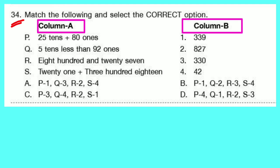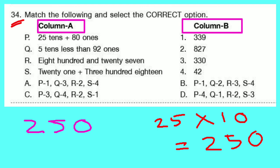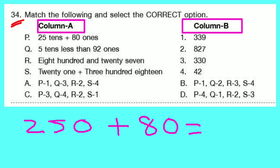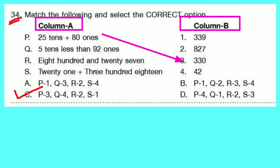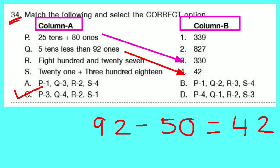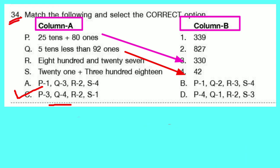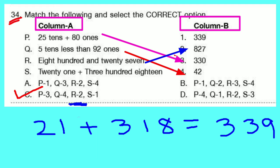Question number 34: Match the following. P — 25 tens plus 80 ones: 250 + 80 = 330, so P matches with 3. Q — 5 tens less than 92 ones: 92 − 50 = 42, so Q matches with 4. R — 827: matches with 2. S — 21 ones plus 318: 21 + 318 = 339, so S matches with 1. Option C is correct.